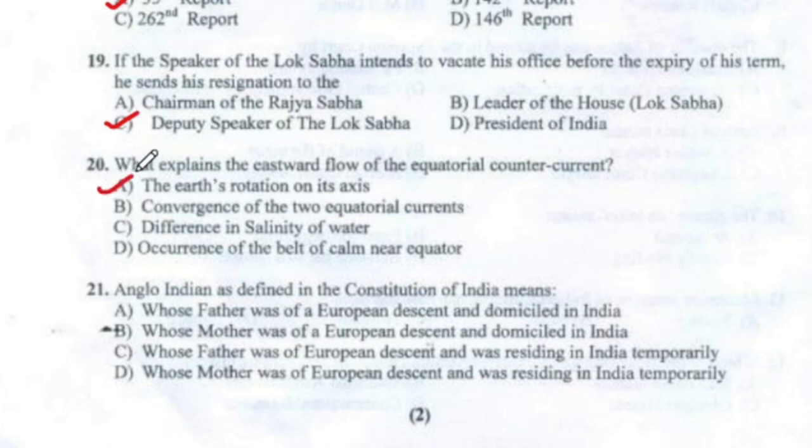Question 21: Anglo-Indian as defined in the Constitution of India means a person whose father was of European descent and domiciled in India. Option A.